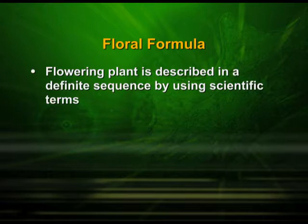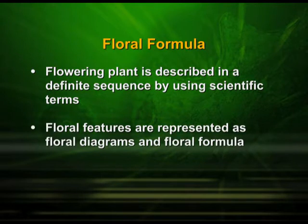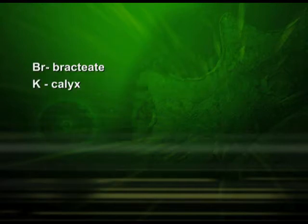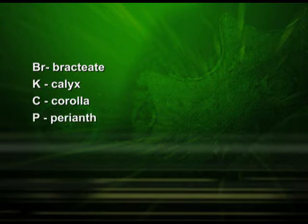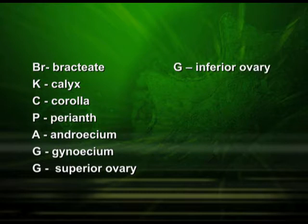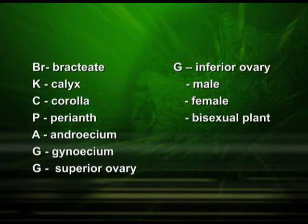Floral formula. A flowering plant is described in a definite sequence by using scientific terms. The floral features are represented as floral diagrams and floral formula. The floral formula is represented by some symbols: bracteate, calyx, corolla, perianth, androecium, gynoecium, superior ovary, inferior ovary, male, female, bisexual plant, actinomorphic, and zygomorphic.